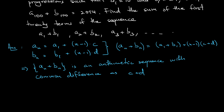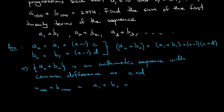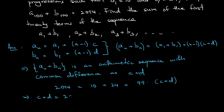Now I need to find the common difference c+d. Substituting n=100: a₁₀₀ + b₁₀₀ = (a₁+b₁) + 99(c+d). We know a₁₀₀+b₁₀₀ = 2014, a₁=10, b₁=24. So 2014 = 34 + 99(c+d), which gives c+d = 20. The common difference of the combined sequence is 20, and the first term is 34.